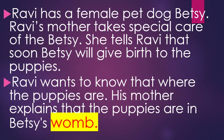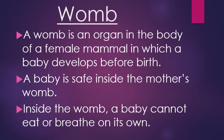Now a question arises: what is a womb? A womb is an organ in the body of a female mammal in which a baby dwells before birth. A baby is safe inside the mother's womb. Inside the womb, a baby cannot eat or breathe on its own. So womb is a special organ inside the mother where the baby grows.